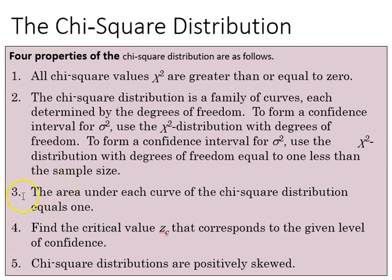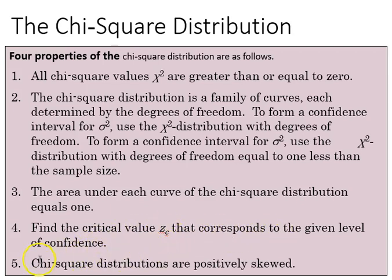The third property is that the area under each curve is 1, also like both t and z, although we're not talking about a normal curve. And the final property is that chi-square distributions are positively skewed.